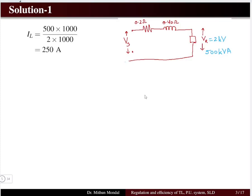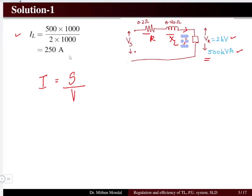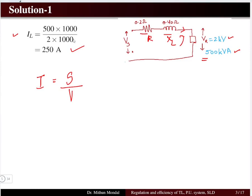Let us see the solution. Since the transmission line is single phase, the parameters given are for one conductor — that is, per conductor. We have the resistance and inductive reactance given, and the voltage and power at the load (receiving end) are 2 kV and 500 kVA. We determine the current from the power formula: apparent power of 500 kVA divided by the voltage gives us a current of 250 amperes flowing in the transmission line.